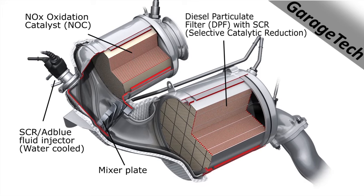To reduce NOx emissions, a NOx oxidation catalyst is used along with the AdBlue system. On most modern engines with an AdBlue system, there are two catalysts placed as close to the engine as possible. The top one is the NOx oxidation catalyst and the lower one is the diesel particulate filter with selective catalytic reduction. In this diagram we can also see the AdBlue fluid injector, which on this engine is water-cooled due to its proximity to the engine and the higher temperatures.